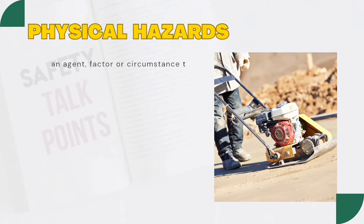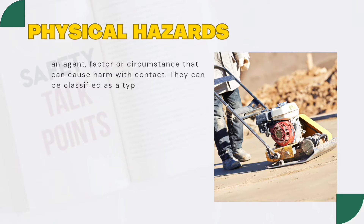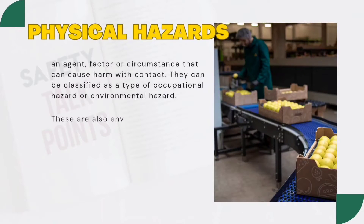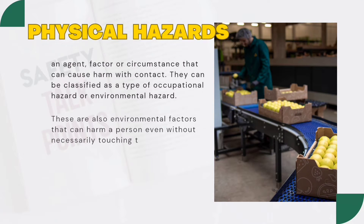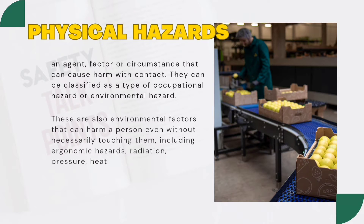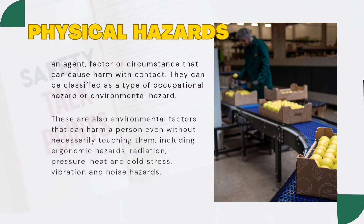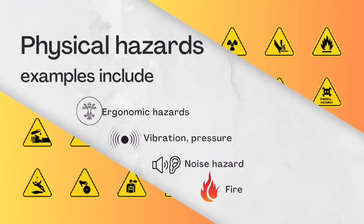A physical hazard is an agent, factor or circumstance that can cause harm with contact. They can be classified as a type of occupational hazard or environmental hazard. These are also environmental factors that can harm a person even without necessarily touching them, including ergonomic hazards, radiation, pressure, heat and cold stress, vibration and noise hazards.